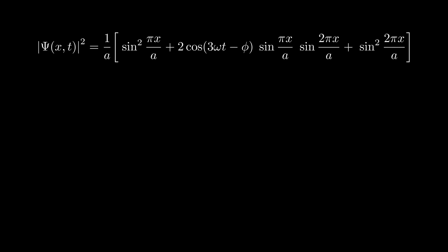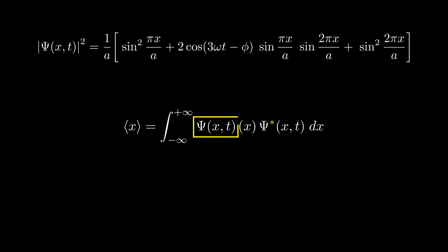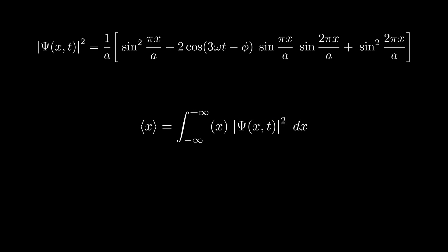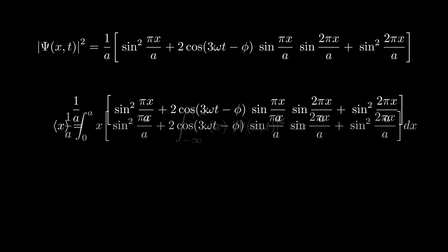In this next step, we'll calculate the expectation value of position, represented by the integral of ψ*(x, t) times x times ψ(x, t). Note that for other observables, the placement of the operator must be between the two wave functions. Now we substitute the square of the absolute value of the wave function.